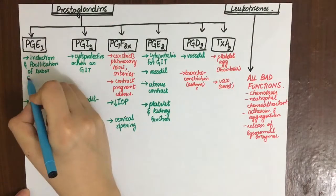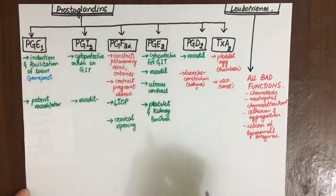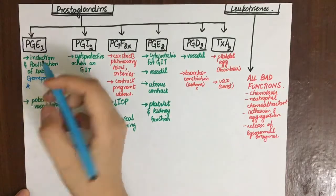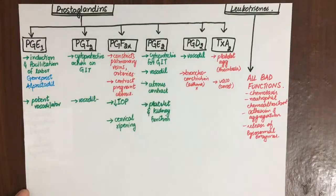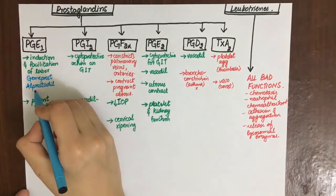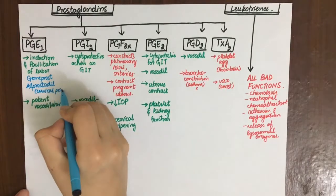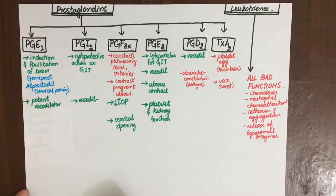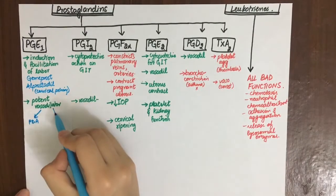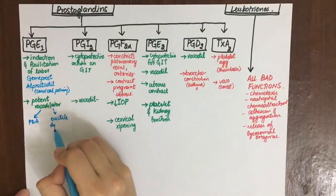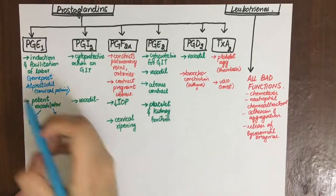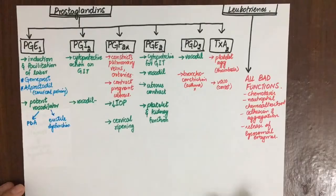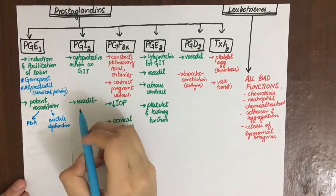PGE1, as it helps in induction and facilitation of labor, gemiprost and alprostadil are used in cervical priming. Its vasodilatory effect is also helpful in neonates with patent ductus arteriosus who are waiting for surgery and have another heart disease such as transposition of great vessels to keep the ductus arteriosus open. It can also be used as a vasodilator in erectile dysfunction.